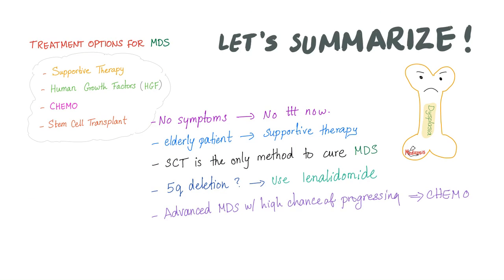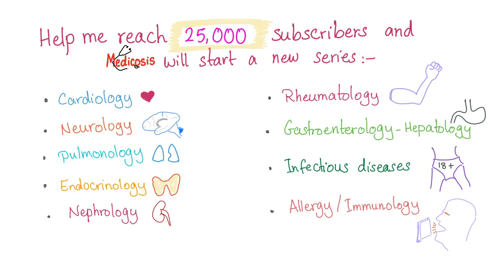Summary: treatment options for MDS are four — supportive therapy, human growth factors, chemotherapy, and stem cell transplant. General rules: no symptoms means no treatment; elderly patients get supportive therapy only; stem cell transplant is the only cure; 5q deletion requires lenalidomide (which is teratogenic); advanced MDS with high probability of progressing to AML should receive chemotherapy.